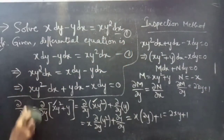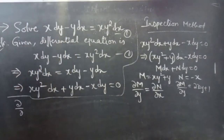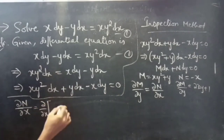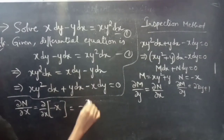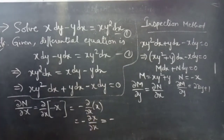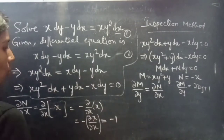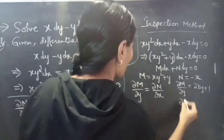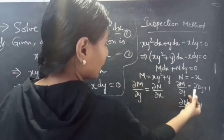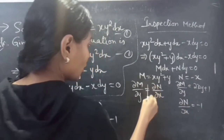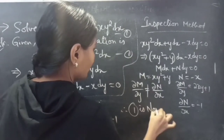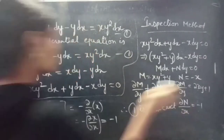Now let's find ∂N/∂x. ∂N/∂x equals ∂/∂x of (minus x), which equals minus ∂x/∂x, and the partial derivative of x with respect to x is 1, so ∂N/∂x equals minus 1. It is clear that ∂M/∂y is not equal to ∂N/∂x, so equation 1 is non-exact.